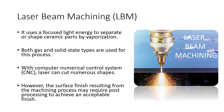LBM uses focused light energy to separate and shape ceramic parts through vaporization — both gas-state and solid-state types exist. A CNC system is used to cut shapes with the laser. However, the surface finish resulting from the machining process will require post-processing to achieve an acceptable finish — concentrating on the particular surface quality.